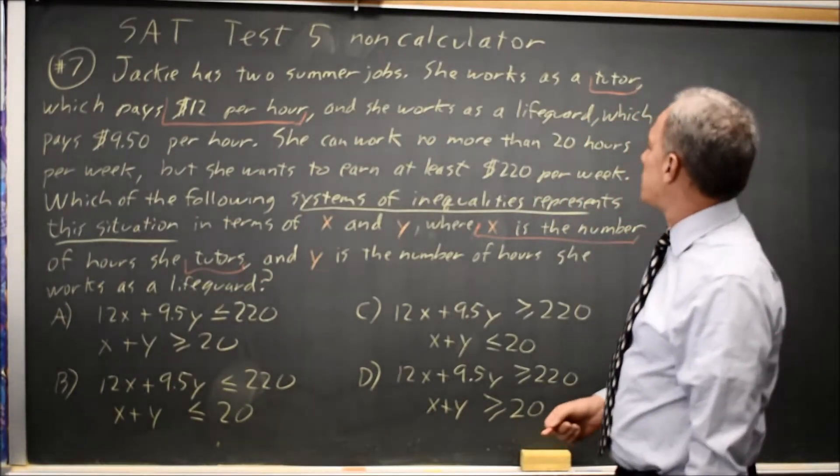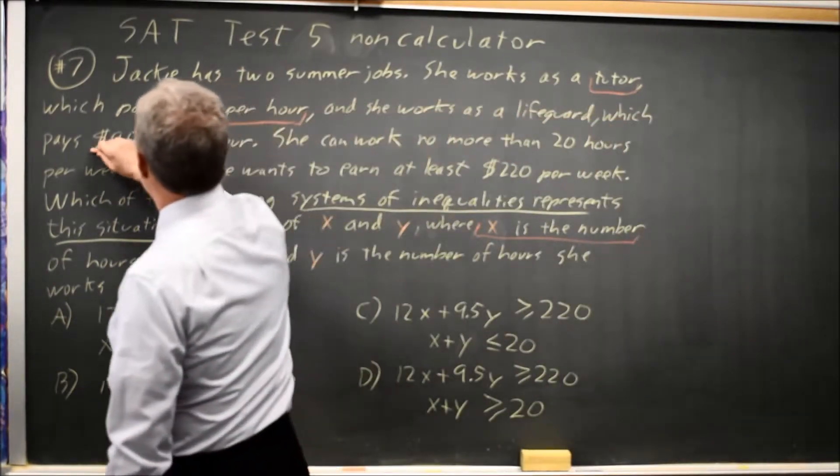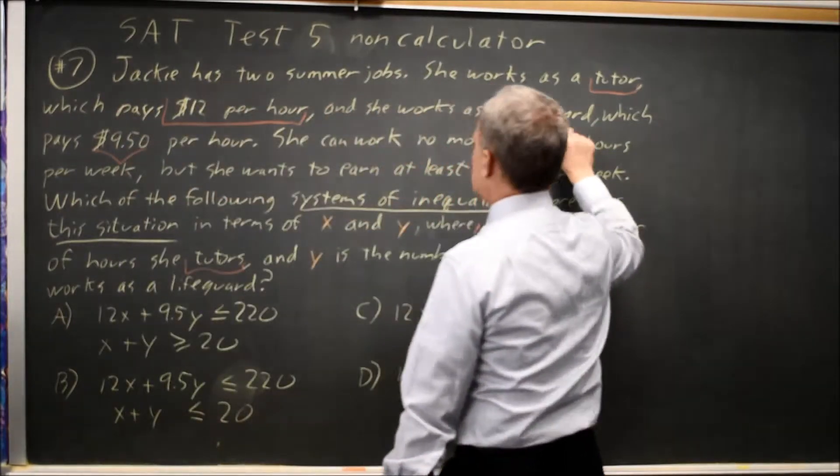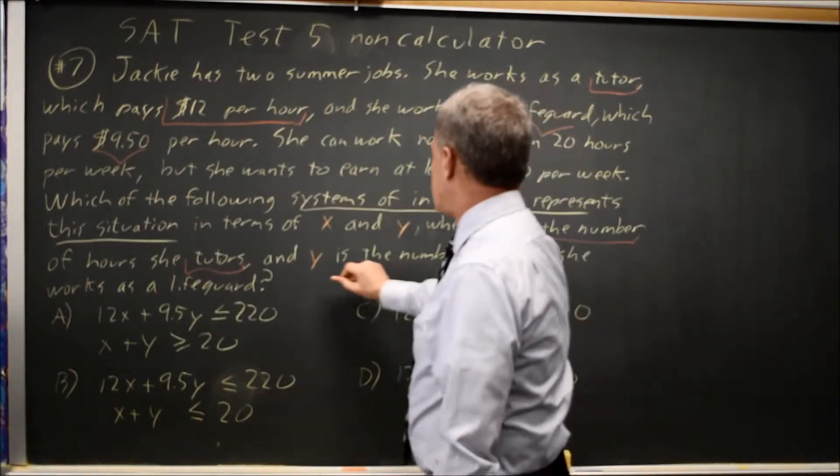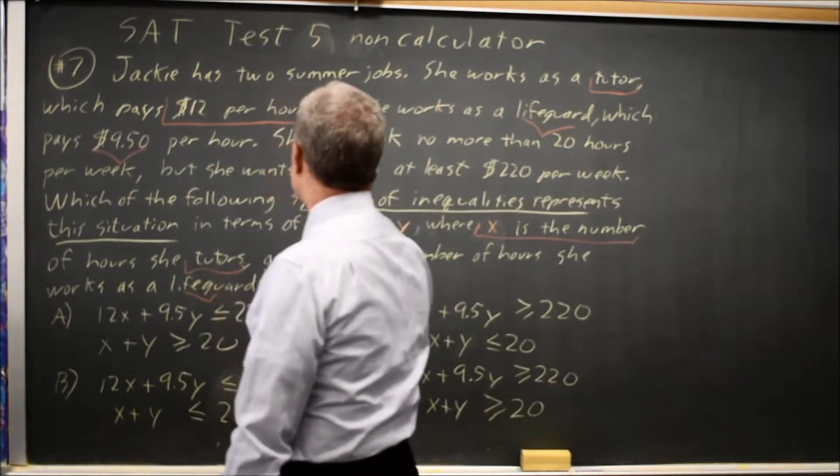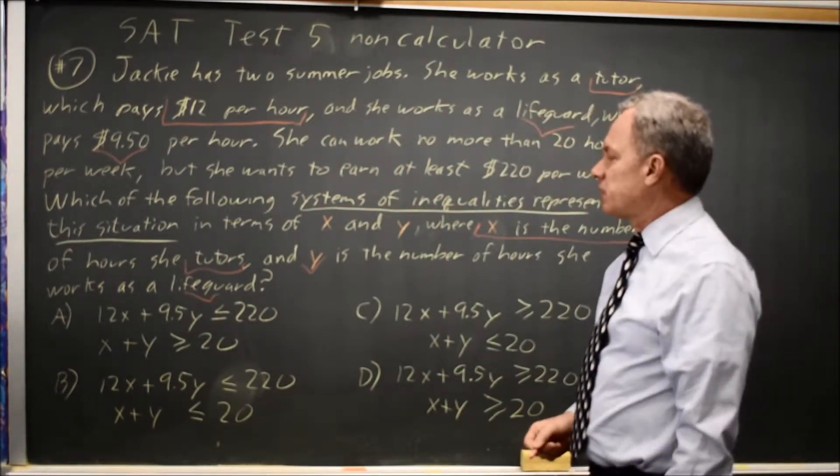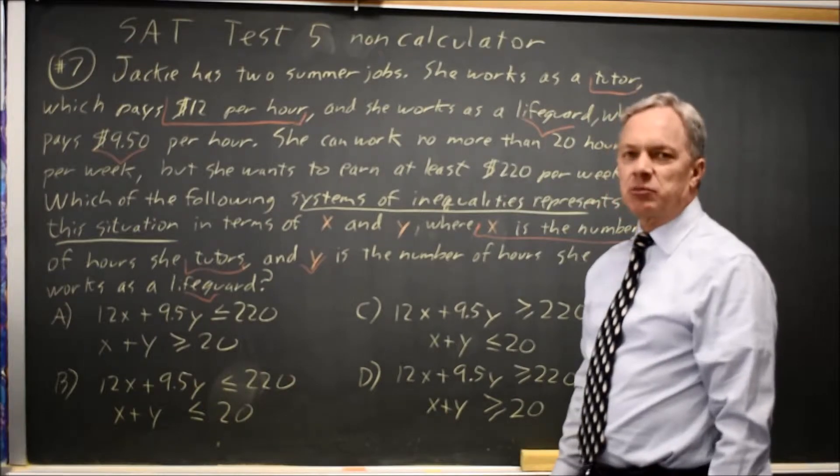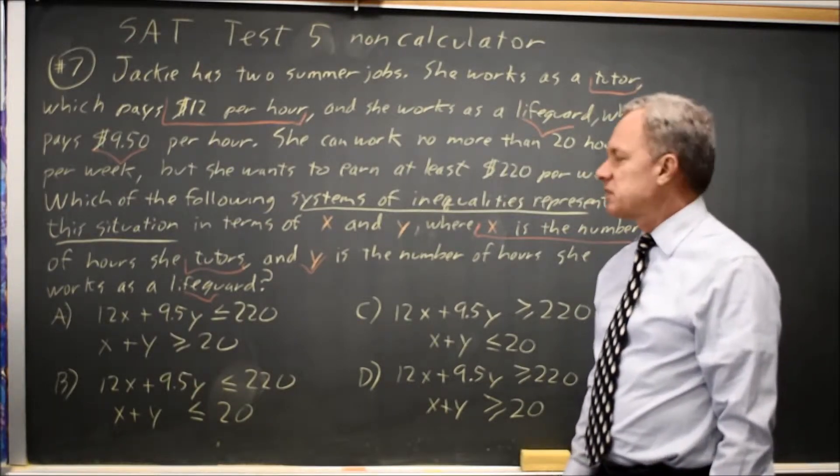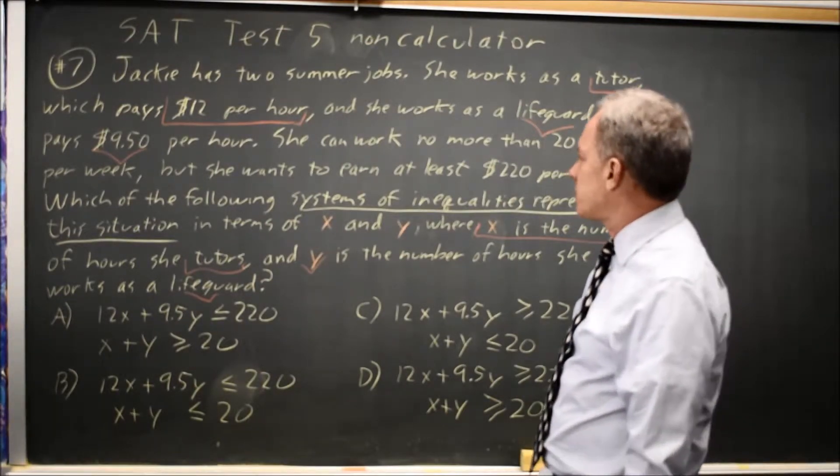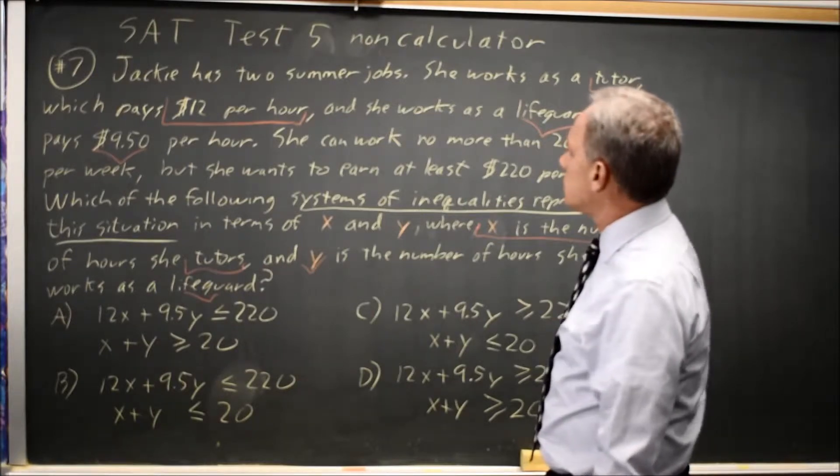And then 9.5y at $9.50 per hour as a lifeguard, where y is the number of hours as a lifeguard. 9.5y would be the amount of money she makes as a lifeguard. So 12x plus 9.5y is the total amount she makes, and the question is, is that total amount supposed to be more or less than 220?